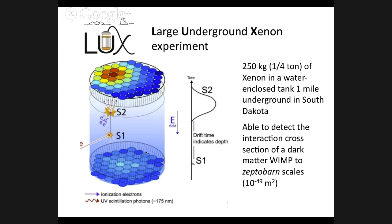If a dark matter particle comes through, it could elicit an interaction with one of the xenon atoms, setting off a cascade of electrons and photons — not from the dark matter directly, but from the xenon interaction. By measuring from both ends, they can figure out the exact place where the interaction took place and estimate how many of these particles stream through. Their estimate is that if this is what dark matter is — a big if — there are something like 10 or 12 of these in the chamber at any given time.